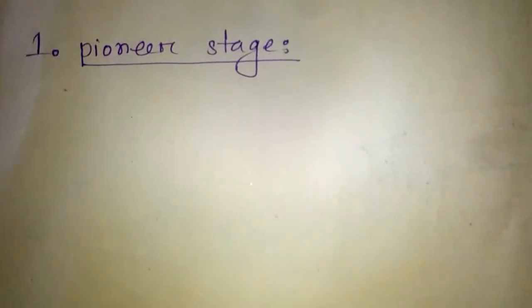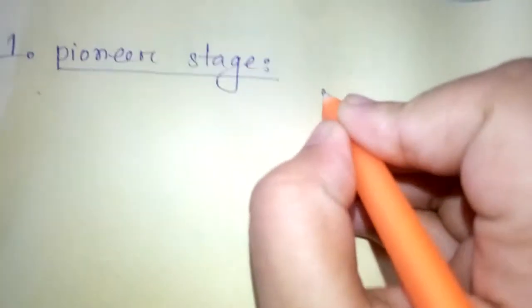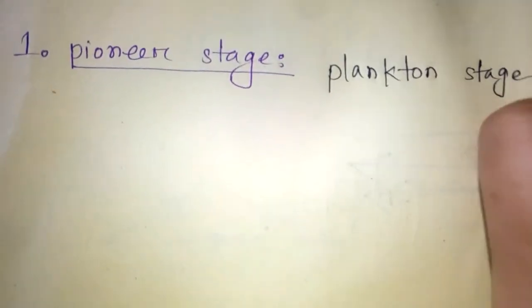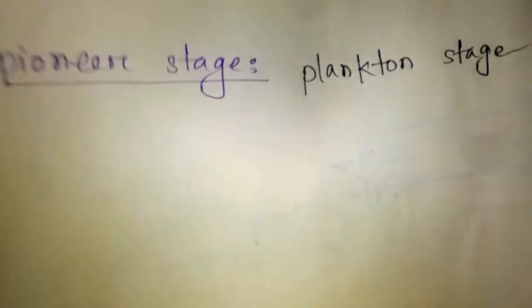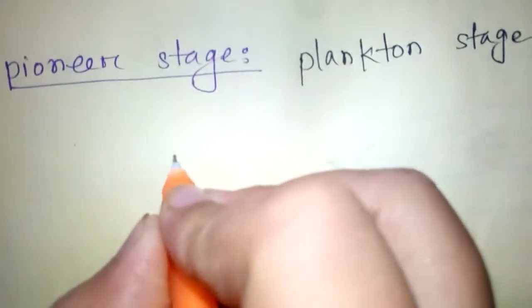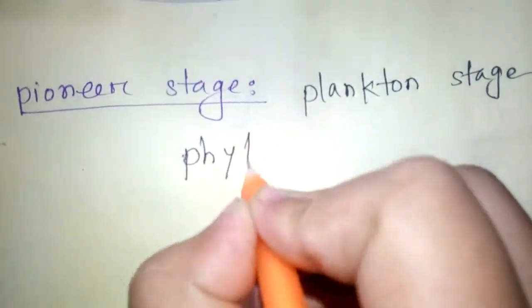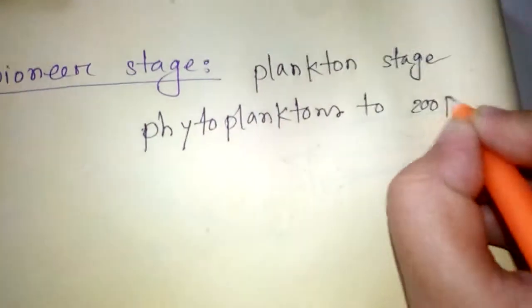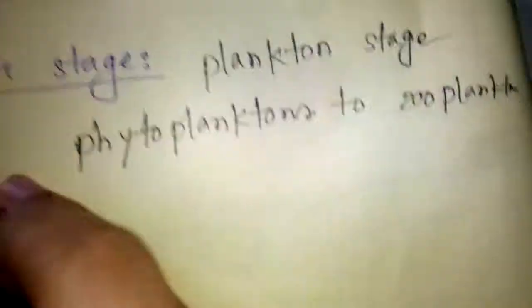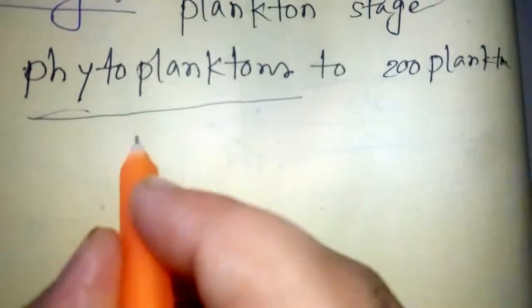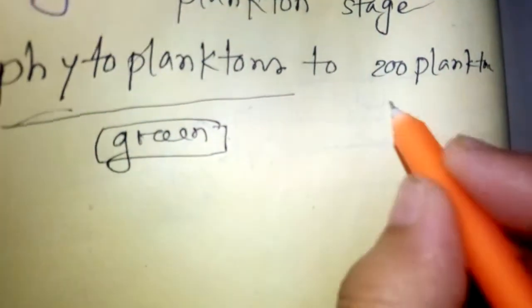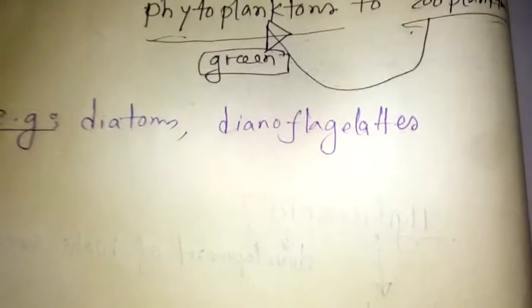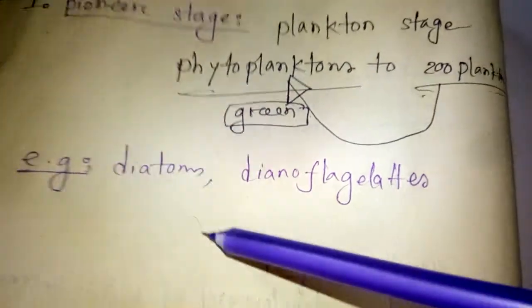Number one, pioneer stage. This pioneer stage is a plankton stage for phytoplankton and zooplankton. Phytoplankton are green and can produce their own food, but zooplankton cannot produce their own food, so they are dependent on phytoplankton. Examples of pioneer stage are diatoms, dinoflagellates, etc.